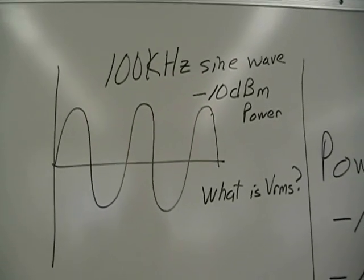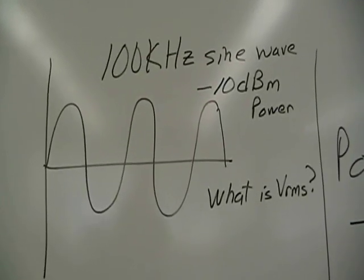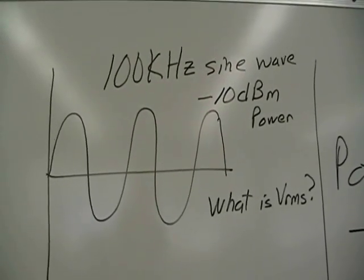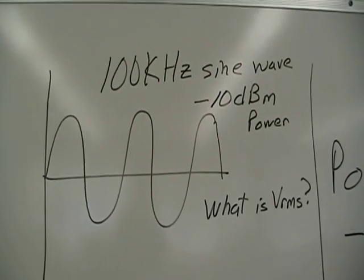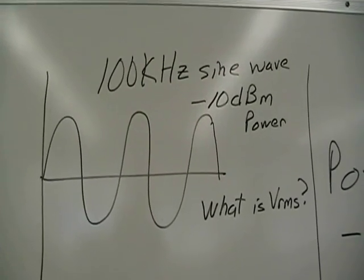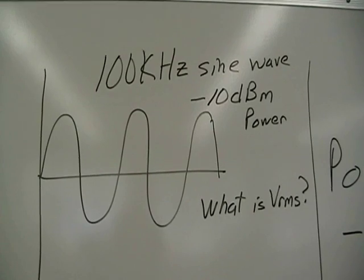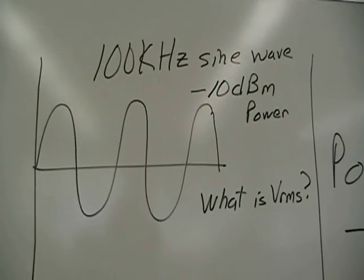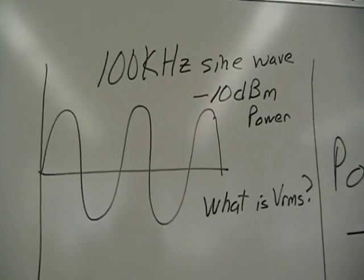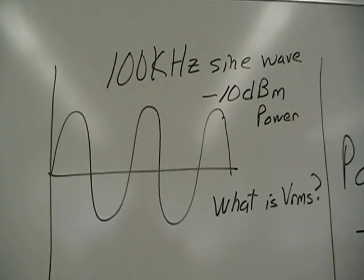Okay, so here is the question. We want to display a 100 kilohertz sine wave with a power of -10 dBm on the spectrum analyzer. The question is, what is the Vrms value for the arbitrary waveform generator?